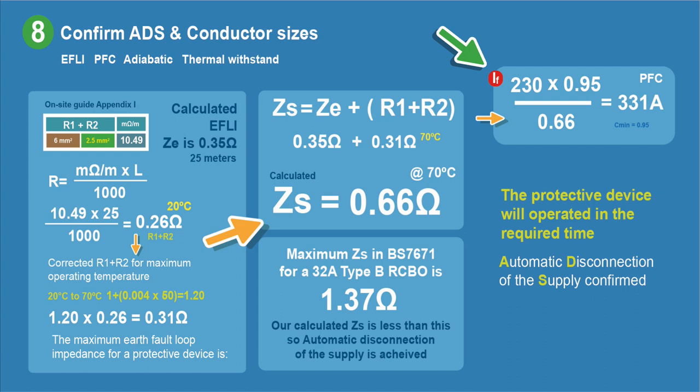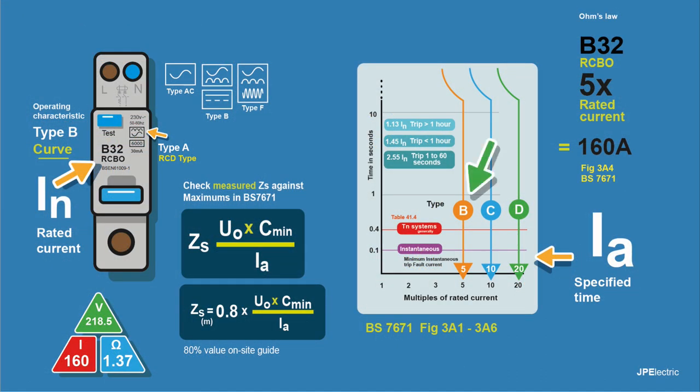We need to calculate the prospective fault current to make sure the protective device will operate within the required time. The formula is 230 × 0.95 (the correction factor Cmin for voltage fluctuations) divided by our Zs of 0.66, which gives us a prospective fault current of 331 amps. For a Type B RCBO, instantaneous tripping is at five times the rated current: 5 × 32 = 160 amps. We have a prospective fault current of 331 amps, so automatic disconnection of the supply is confirmed.